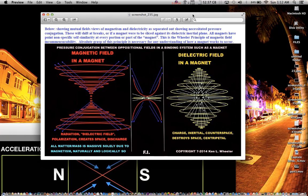For anybody trying to understand magnetism, you have to understand what field incommensurability is and how the two fields within a magnet express themselves.